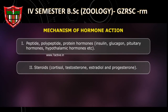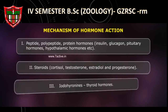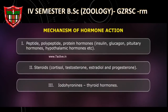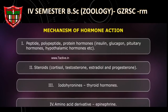Number 2: steroid hormones — cortisol, testosterone, estradiol, and progesterone. Number 3: iodothyronins — thyroid hormones.